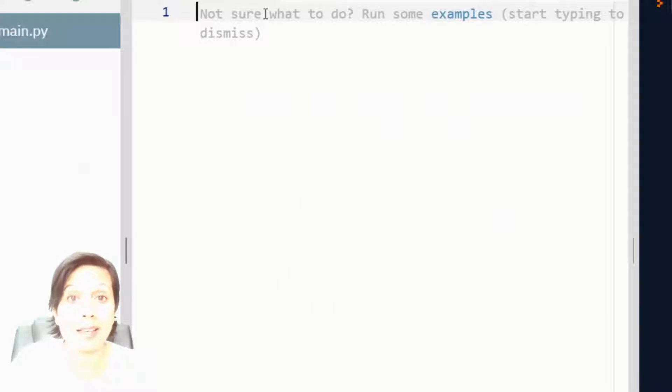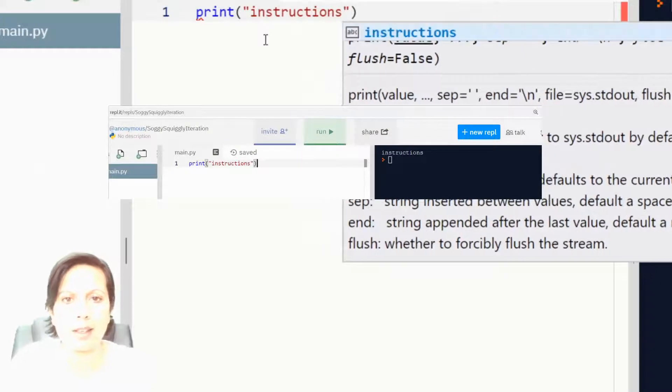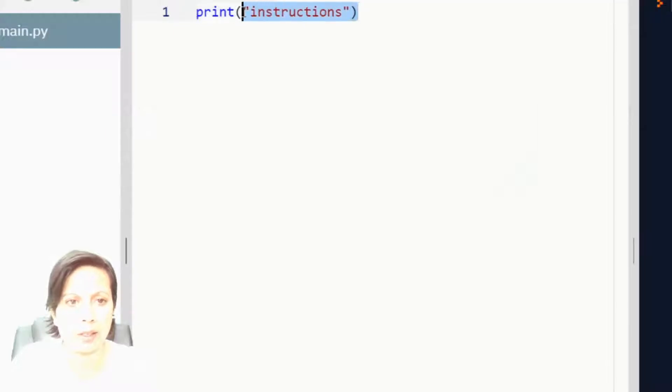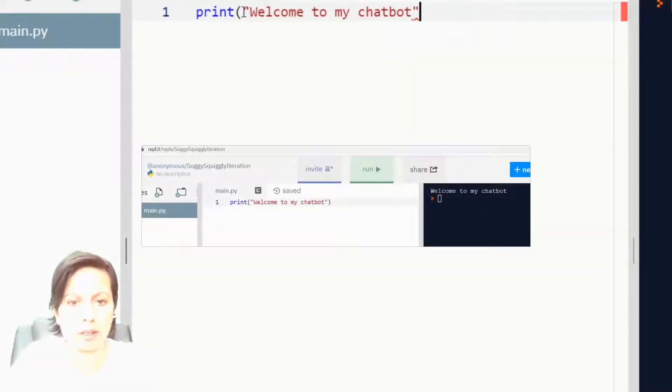On the left-hand side is where you actually type in your instructions. And on the right-hand side, if you click this green button here, which says Run, it produces an output, or it executes your instructions. So anything I type in here, such as welcome to my chatbot, and press Run, is produced as an output on the screen.